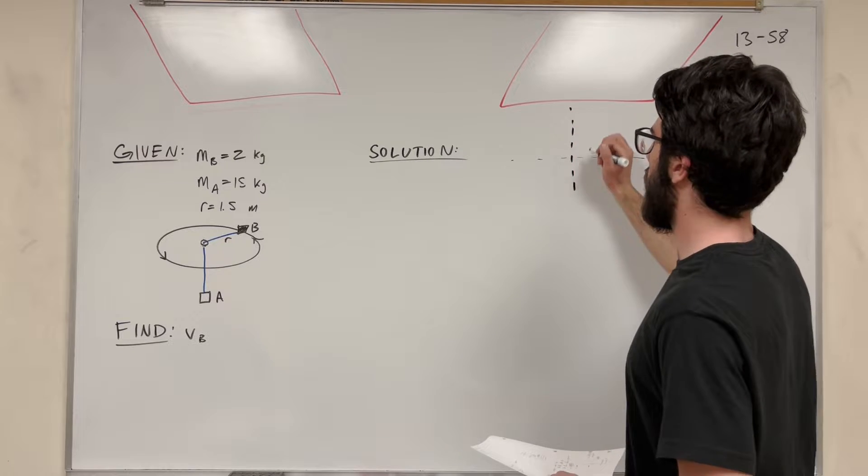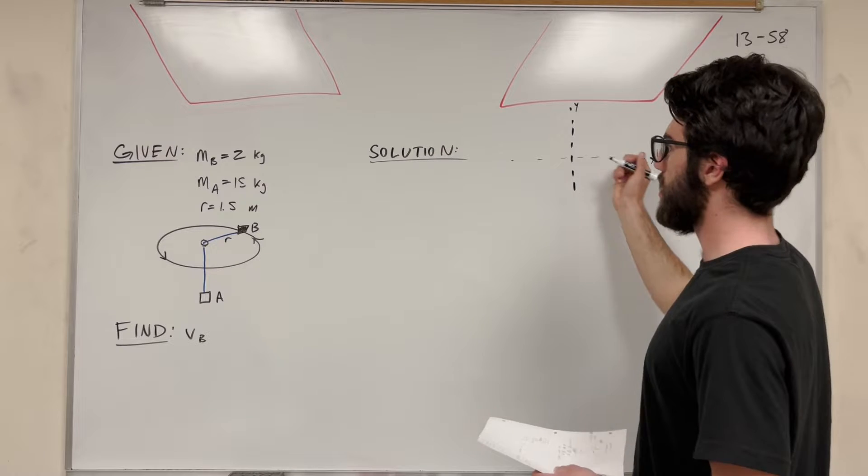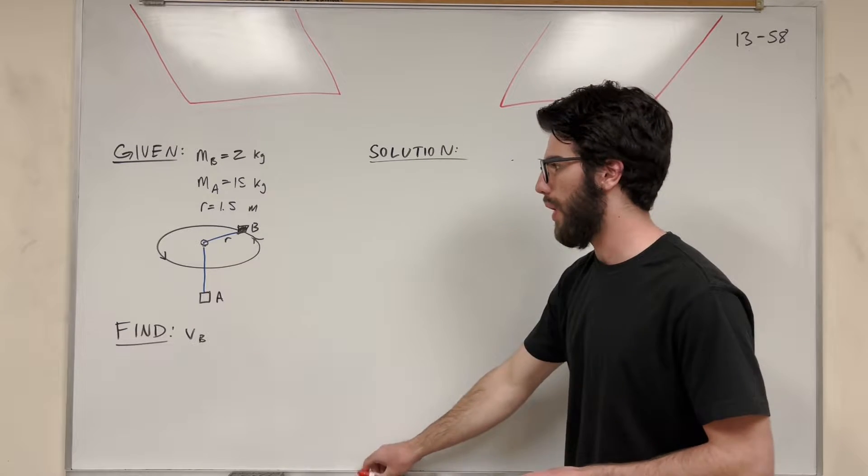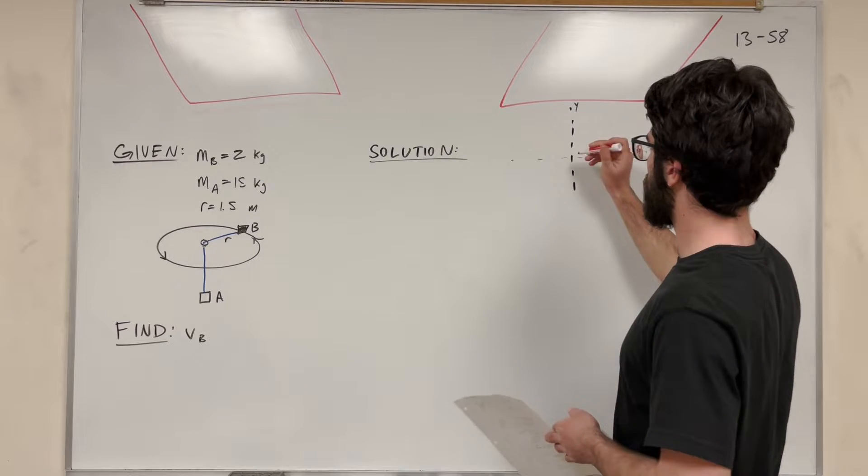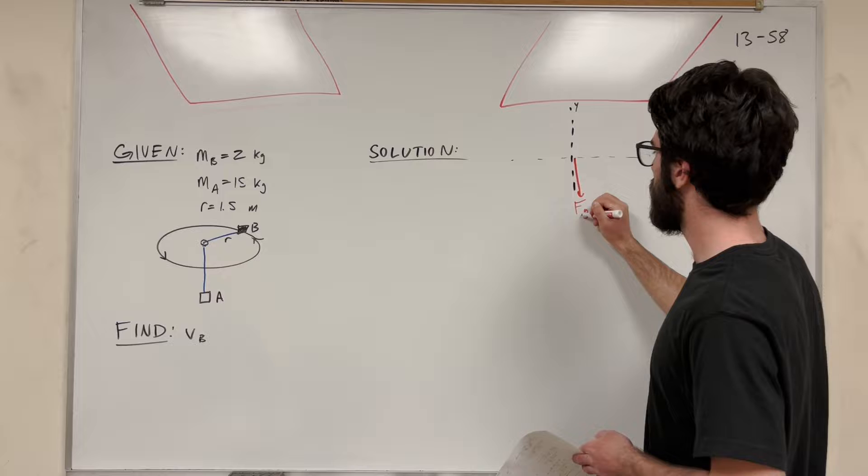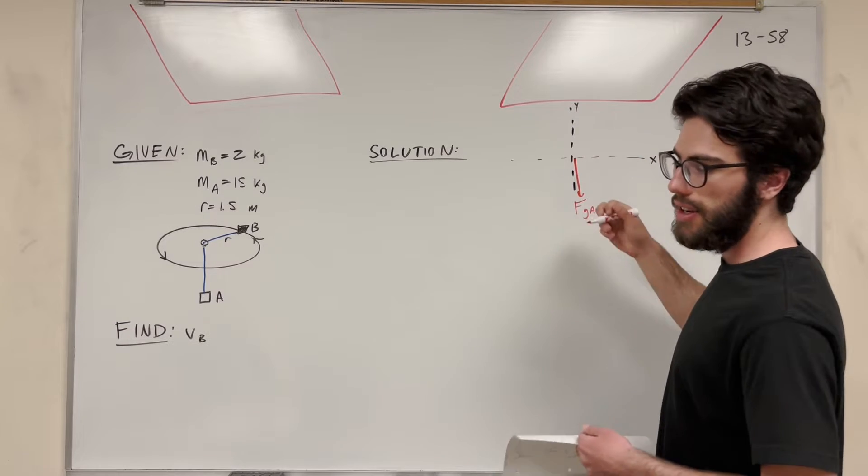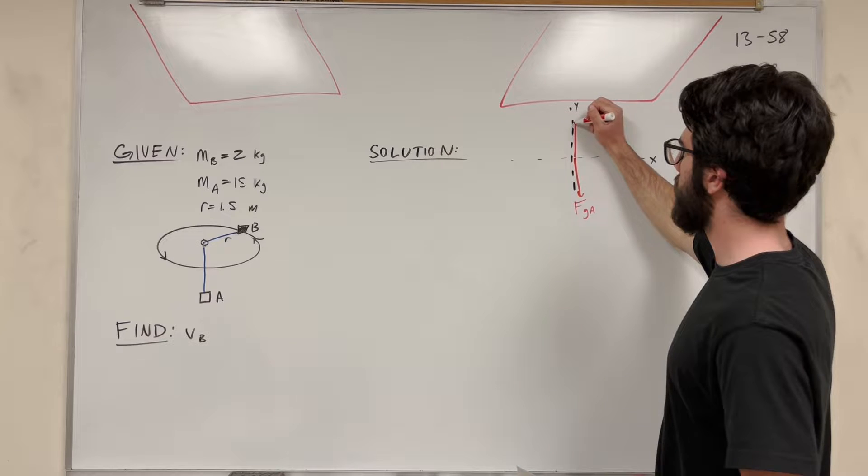Let's start with block A. Here is Y, here's X, and of course block A is going to have a weight because it's 15 kilograms. So let's go ahead and draw that. This is the force gravity of A, and then because we have a weight, we have something holding it up, so of course we're going to have that tension.